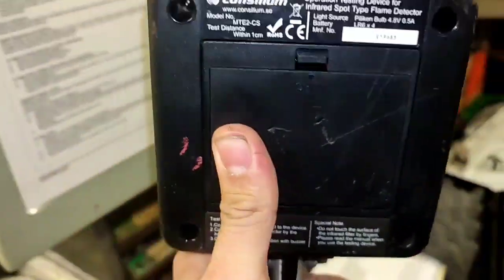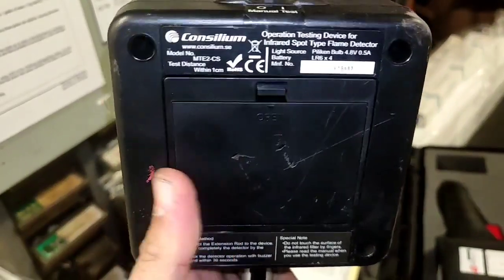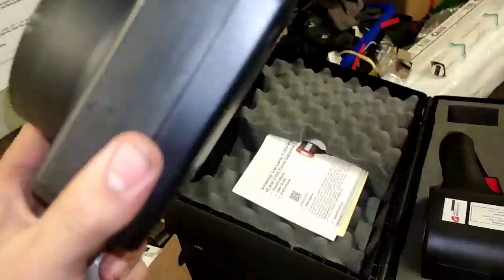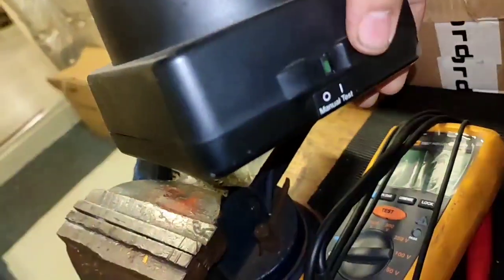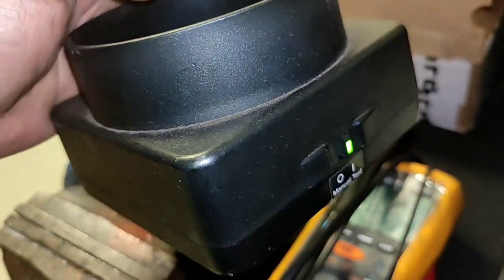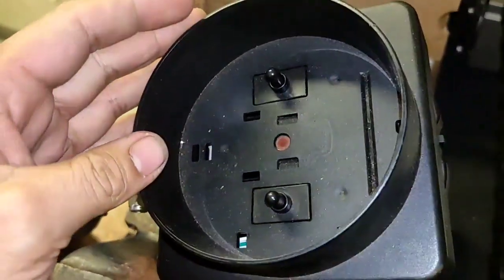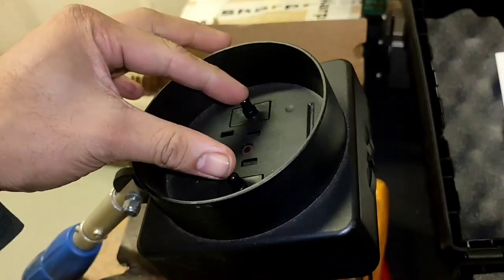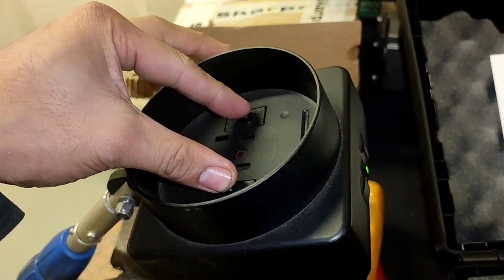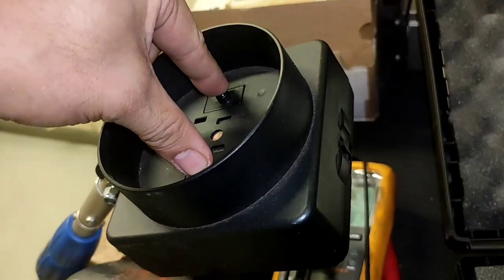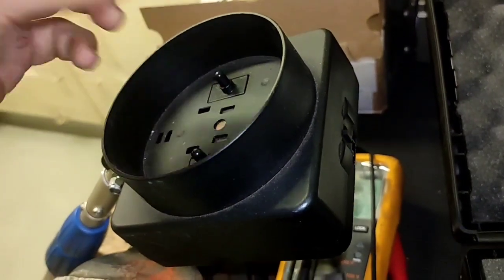This is our old test lamp, flame detector IR spot type, Consilium. The maker is Consilium. Attached to the telescopic rod, and then this is the selector. If that is test mode automatic, you put in the flame sensor. If that selector is at off mode, you need to engage this to limit switch so that automatic will test.